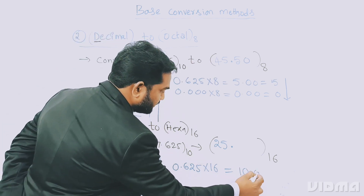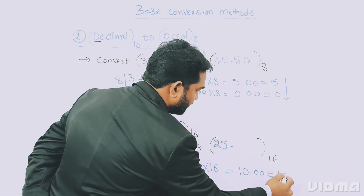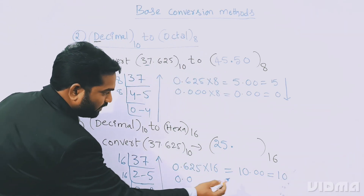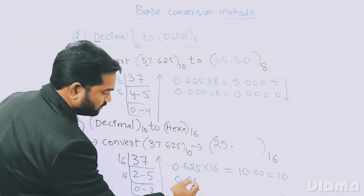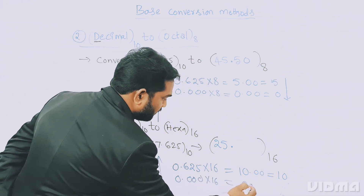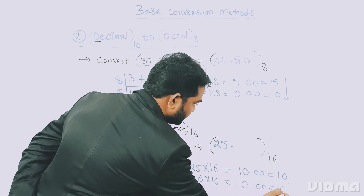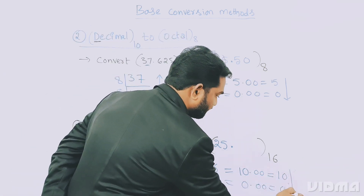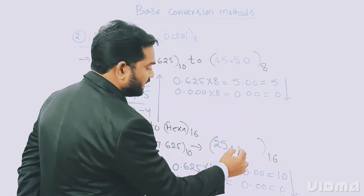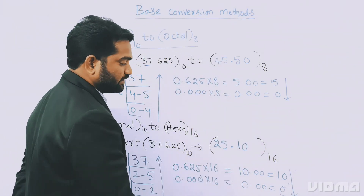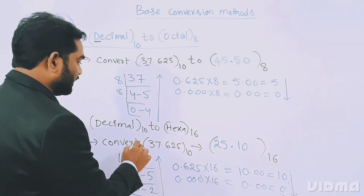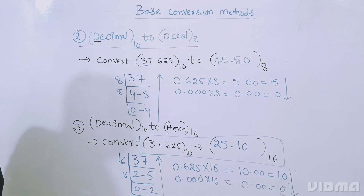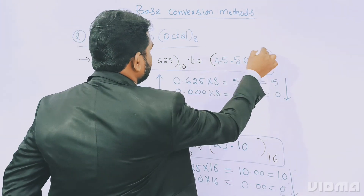0.625 × 16 = 10.00. The remainder is 10. Then 0.00 × 16 = 0. Writing the fractional answer from top to bottom gives 10. So the full answer is 25.10 of base 16. This is the decimal to hexadecimal conversion.